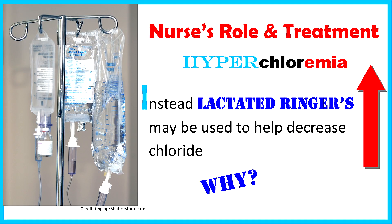I is for instead use lactated Ringer's. LR can be used to help decrease that chloride level. When we administer LR IV, the lactate once it enters the body is actually converted into bicarb. This helps increase bicarb levels, which in turn will bring down the chloride levels — which is what we want in hyperchloremia, because bicarb and chloride have an opposite relationship. This is especially helpful if the patient is experiencing acidosis, because it will help increase the pH in the blood and make it more alkaline. Additionally, administration of bicarb and certain diuretics can also help decrease chloride levels.